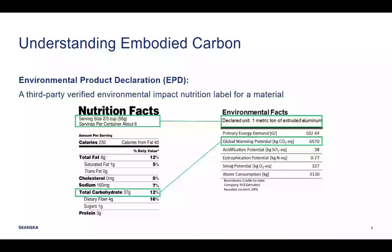When we talk about embodied carbon, it's important to highlight environmental product declarations, or EPDs. These are third-party verified environmental impact nutrition labels for a material. Similar to how nutrition facts labels help you compare packaged foods to find those with low carbs per serving, EPDs help us compare building products. In construction, we can utilize EPDs to identify products that serve the same function but have lower global warming potential and embodied carbon per declared unit, helping us reduce the embodied carbon footprint on our projects.